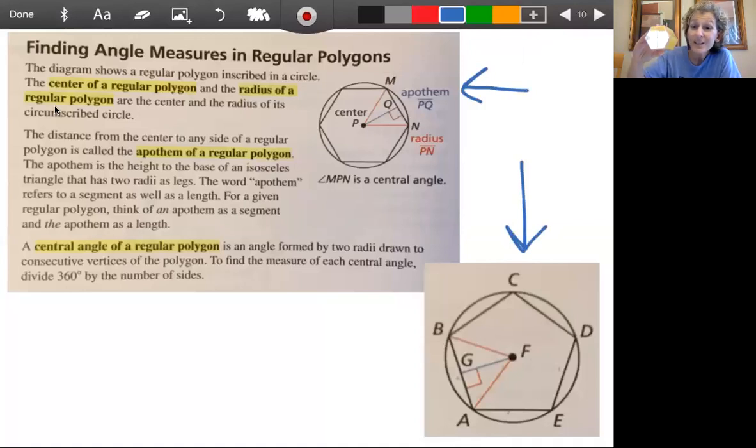And so eventually we'll be able to find the volume of this because once we know how to find the area of the base or the area of the top, volume is just take that area times the height. So the volume for a prism is the area of the base times the height.